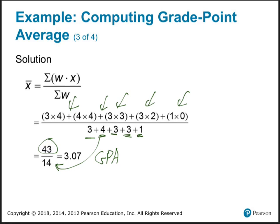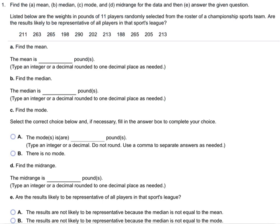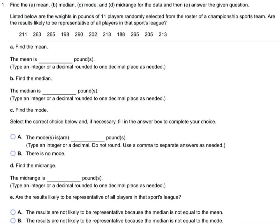So 3.07 GPA — that's a weighted average, a representation of the middle or typical grade she earned. It's called a weighted average because it's weighted heavier by the units. All right, so into the homework we go. Question number one: find the mean, median, mode, and mid-range — I haven't shown you mid-range yet, I'll show you that in this example.